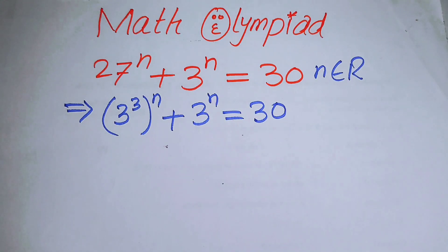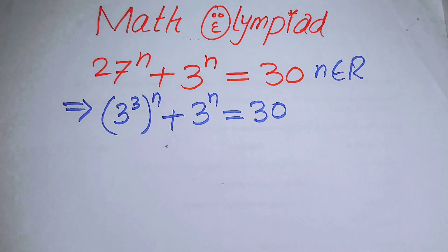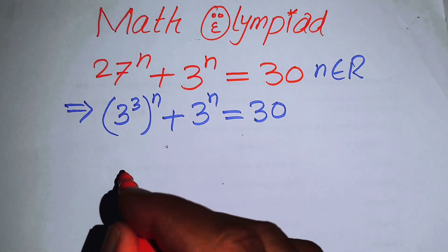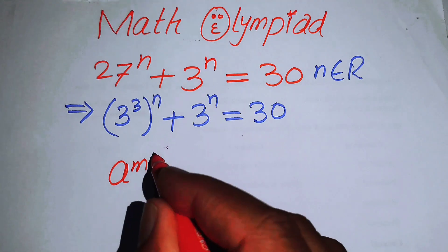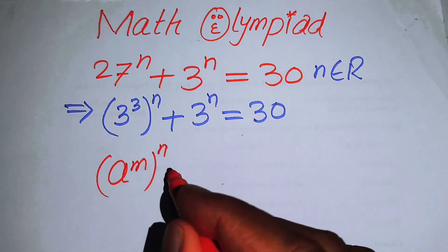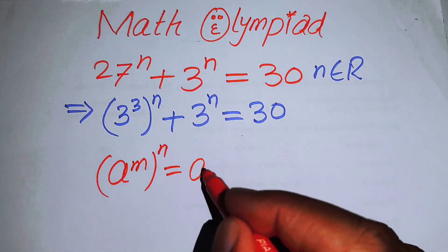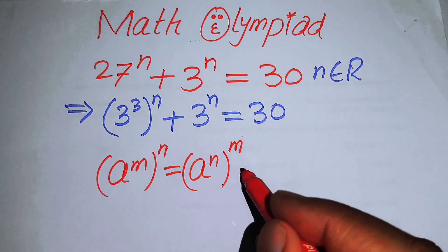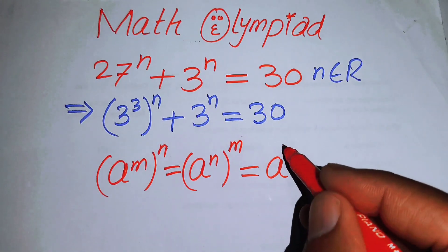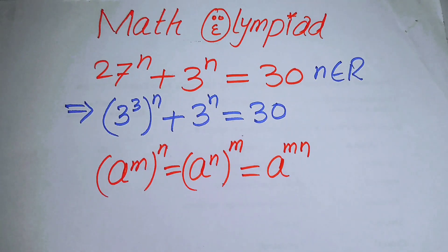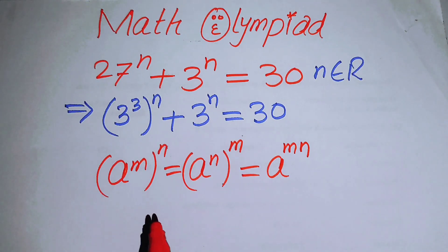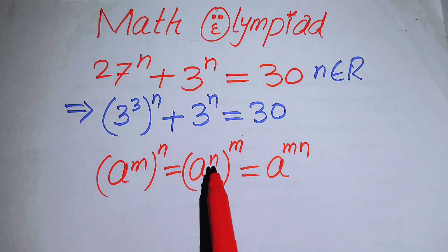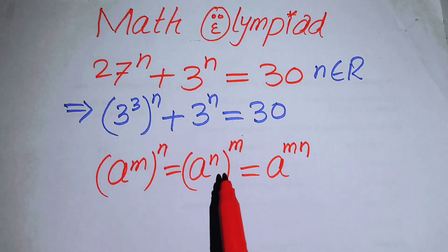In the next step we can use the exponential law. You know that if we have a to the power of m, to the power of n, it is equal to a to the power of n and its whole power m, which equals a to the power of m times n.